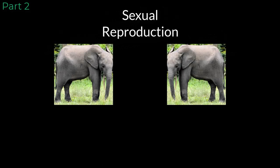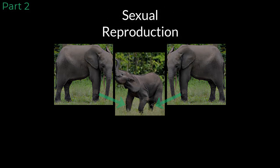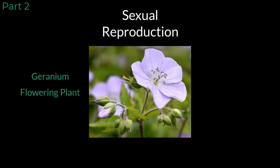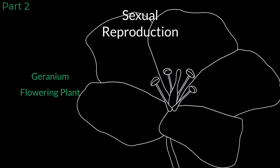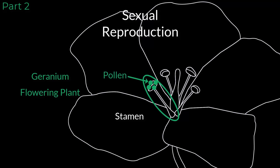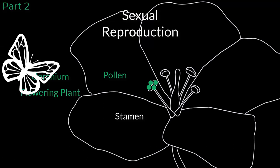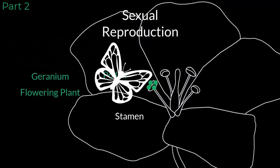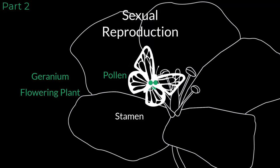Sexual reproduction occurs when two organisms, or sets of genetic material, combine to make an offspring. A great example of this is in flowering plants. Most flowering plants have both male and female reproductive parts. The male sex organ of the plant is called the stamen, which contains pollen, which is a structure that carries DNA for reproduction. In the process of pollination, insects or other organisms move along the flower and come in contact with the stamen. In doing so, they can pick up some pollen that sticks to their body.